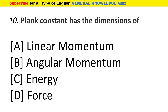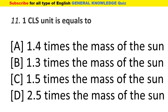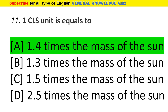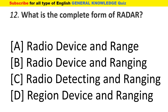Planck's constant has the dimensions of energy. One Chandrasekhar limit unit is equal to 1.4 times the mass of the Sun. What is the complete form of RADAR?